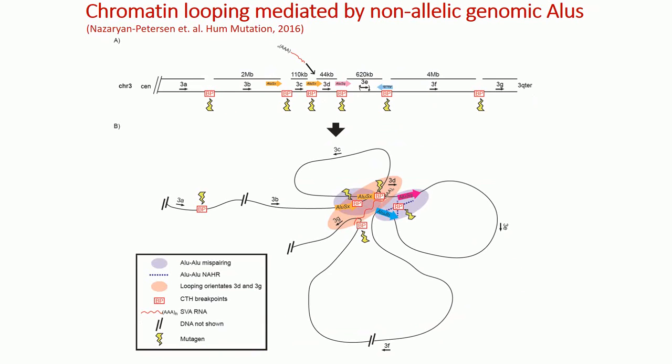Our analysis suggests that the SVAe insertion did not occur prior to or after, but concurrent with the chromotripsis event. We also observed L1 endonuclease potential target sites in other breakpoints at chromosome 3.